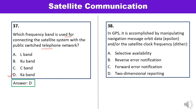Question 38: In GPS, it is accomplished by manipulating navigation message orbital data and/or the satellite clock frequency. What is this? Options are selective availability, reverse error notification, forward error notification, or two-dimensional reporting. This is selective availability. Answer A is correct.